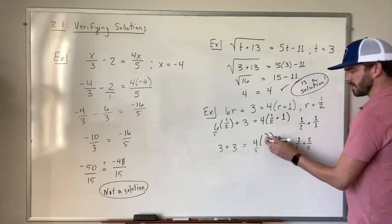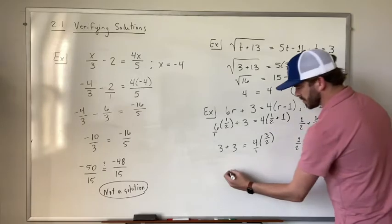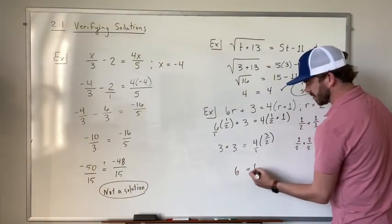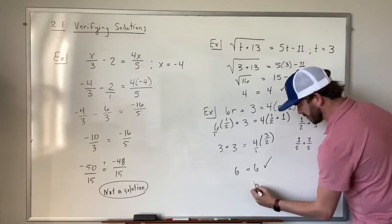Put that over 1. 4 times 3 is 12. 12 divided by 2 is 6. So we get 6 on this side. 3 plus 3 is 6. And so this checks out. And it is also a solution.